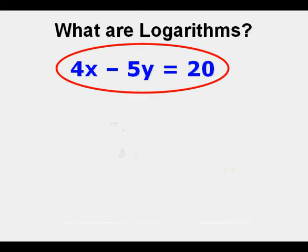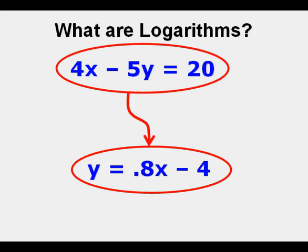In algebra, we have an equation here in standard form 4x minus 5y equals 20. We can convert that into a form that's more to our advantage to graph by just rearranging it, which in slope-intercept form becomes y equals 0.8x minus 4.